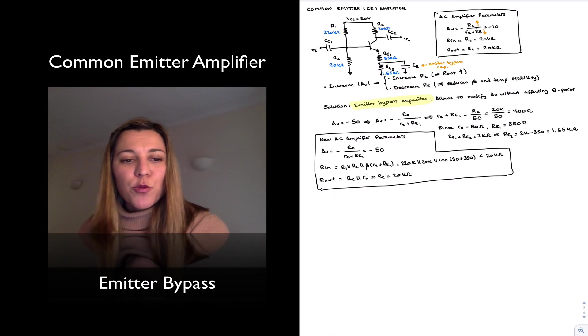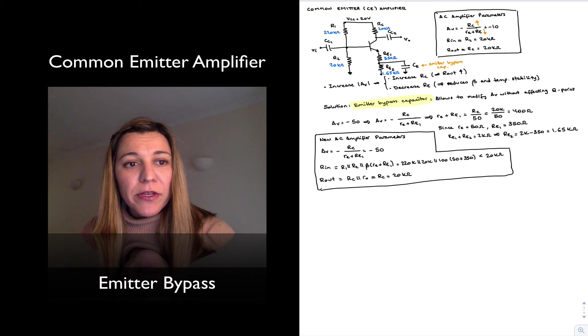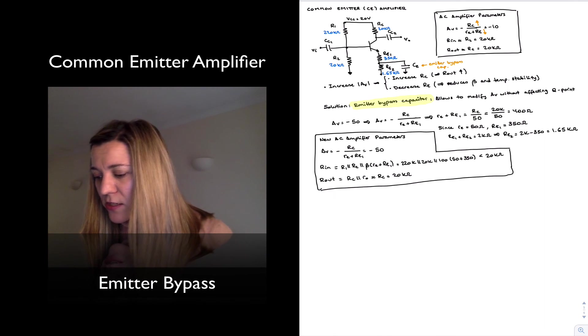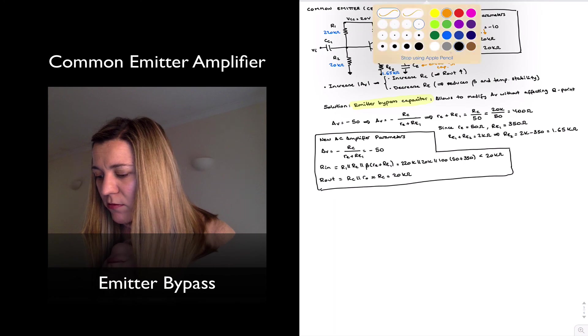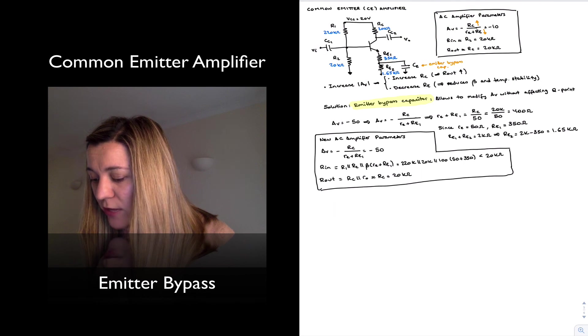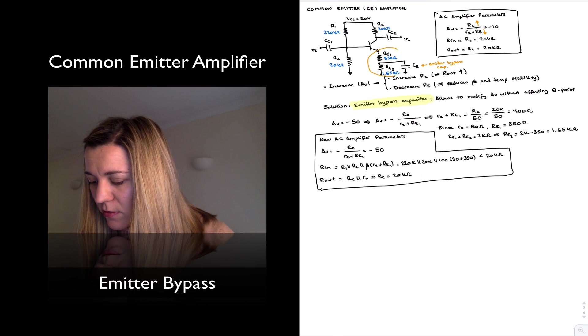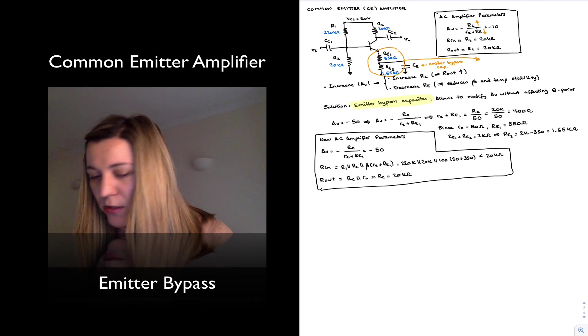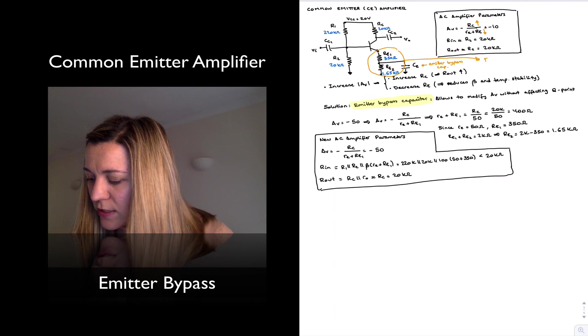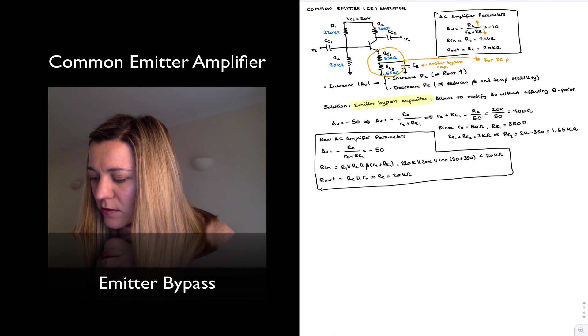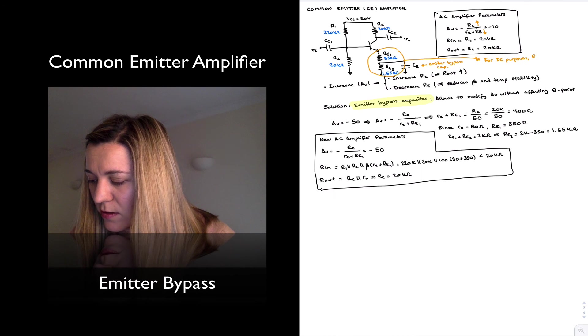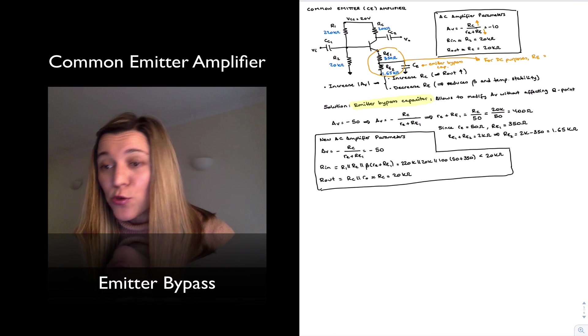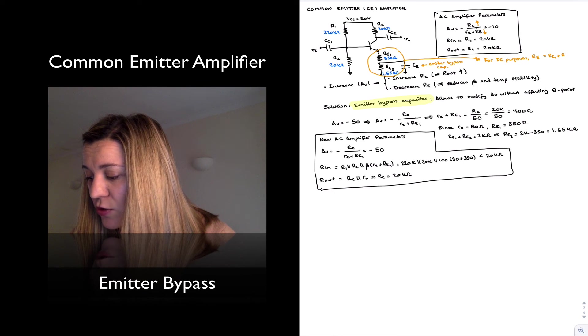So something important to note before we move on with other topics is how the emitter resistor behaves. Let's just write that on one side so we don't forget. I'm going to write it over here. And we have that little note. For DC purposes, the overall emitter resistance RE is equal to the sum of the two resistors RE1 plus RE2.